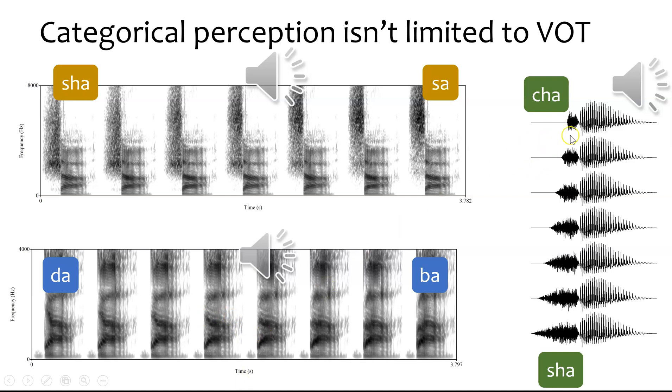And finally, we can go from hearing CHA to SHA — once again experiencing a discrete perceptual jump along that continuum.